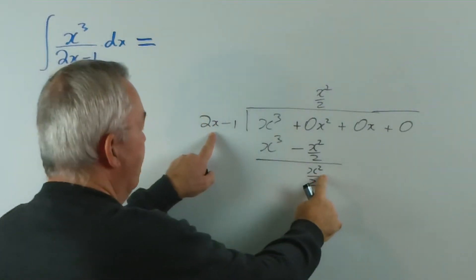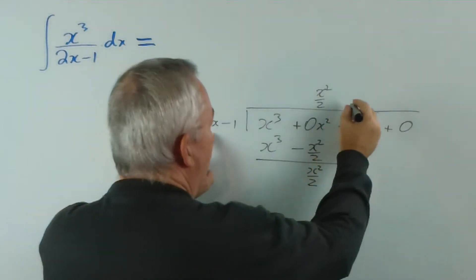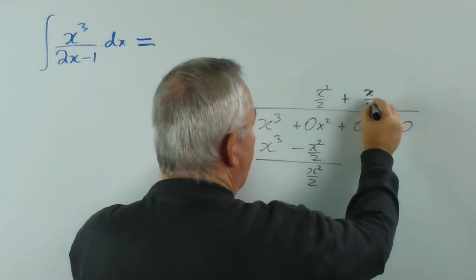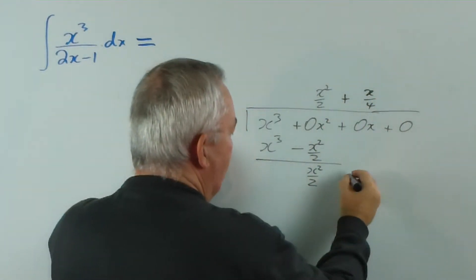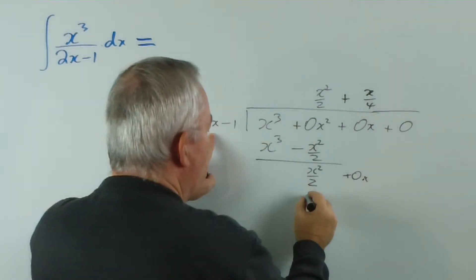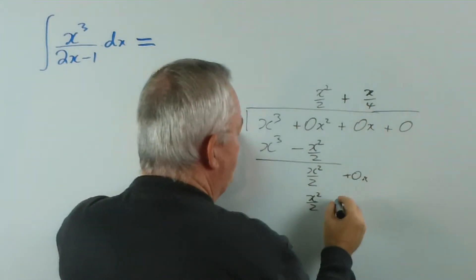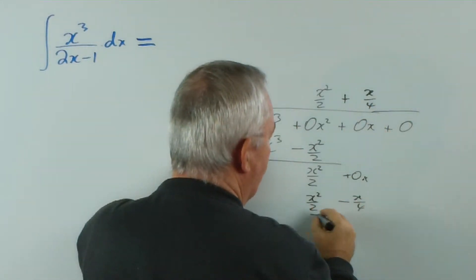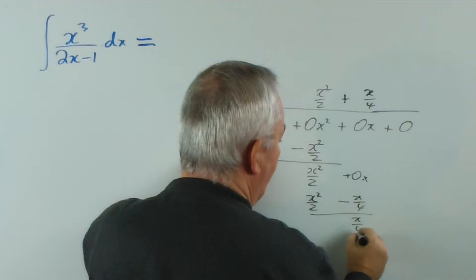Now, x squared on 2 divided by 2x is going to give us x on 4. So we put that in the x column. Bring this down. Multiply. Negative 1 times this is negative x on 4. Subtract, get x on 4.